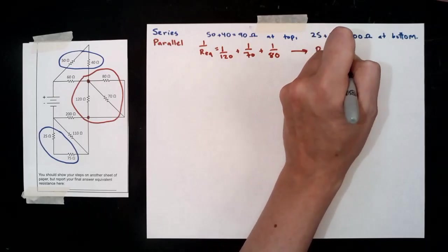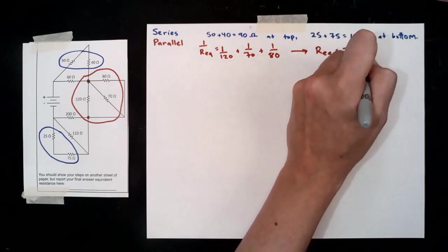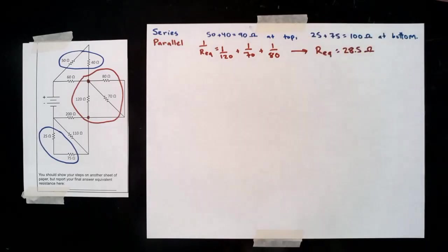You have to be very careful to not just write down that tiny number that's coming out of the fraction, but to actually solve for one over that number. So here that would be 28.5 ohms.